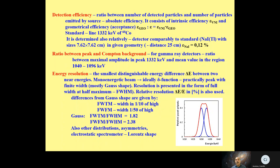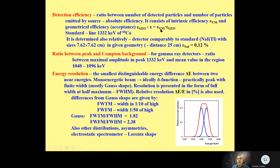Intrinsic efficiency is the ratio of detected particles to particles running from the source toward the sensitive volume of the detector. Since there are two independent efficiencies, the absolute efficiency can be obtained by multiplying the intrinsic efficiency by the geometrical efficiency (acceptance).